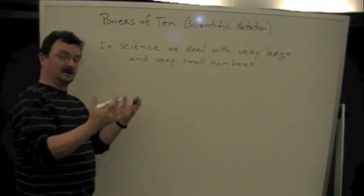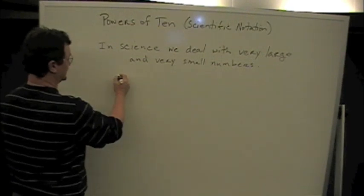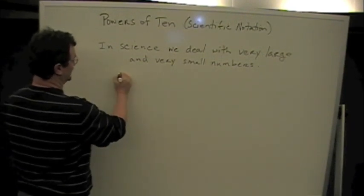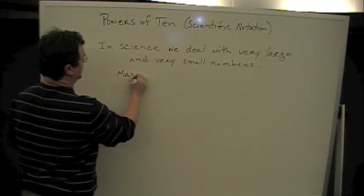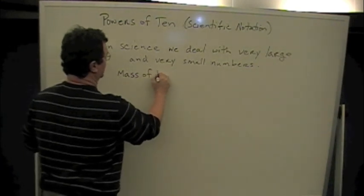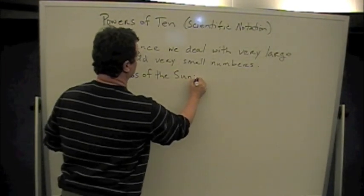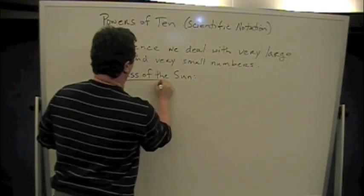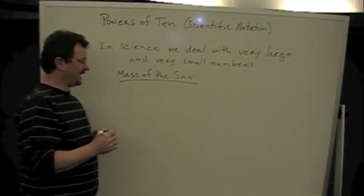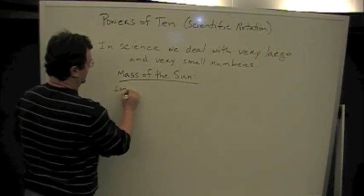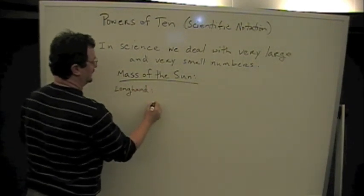The sun is the largest and most massive object in our solar system — that's the reason it's called the solar system. If I wanted to write the mass of the sun — how many kilograms are in the sun — I could write it longhand. And longhand, it would look something like this.